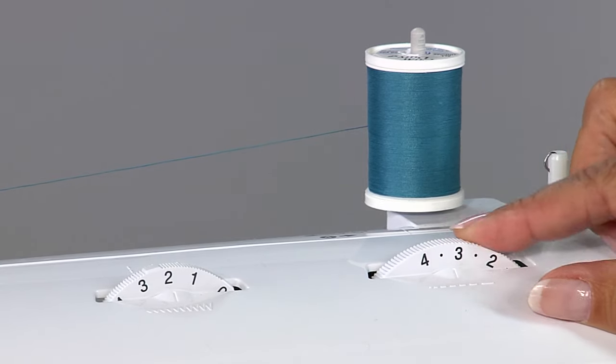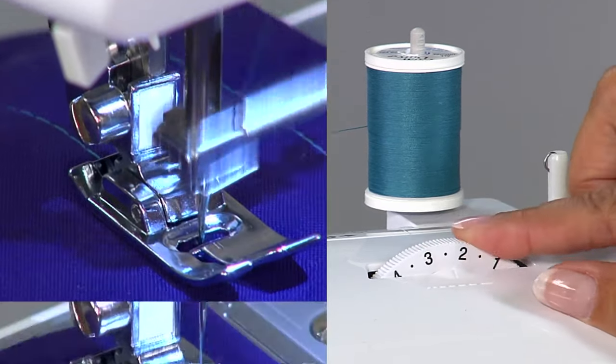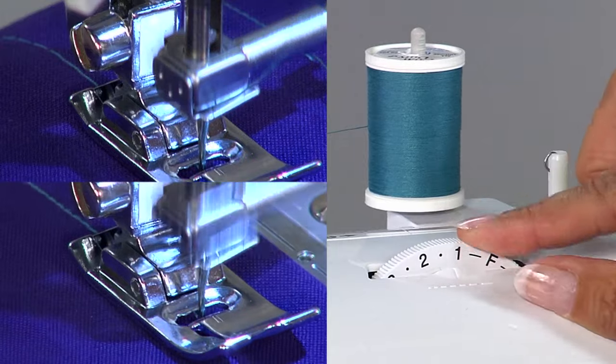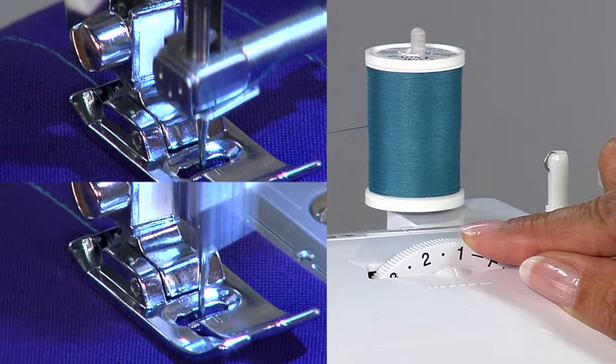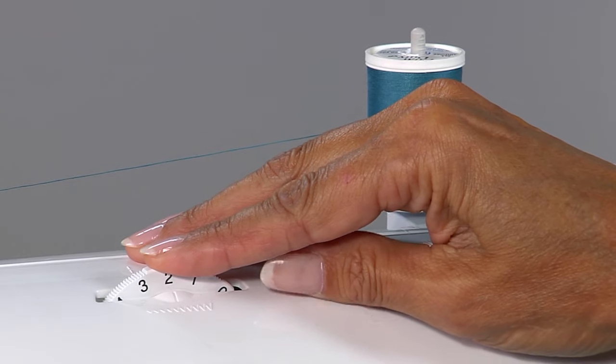The higher number is a longer stitch, which means less stitches per inch, or you can go to a lower number, which is more stitches per inch. The width cannot be adjusted when you're using a straight stitch.